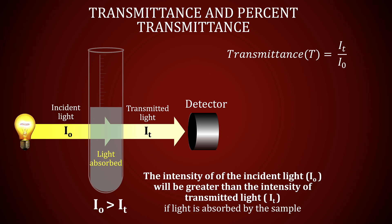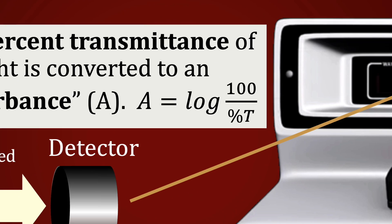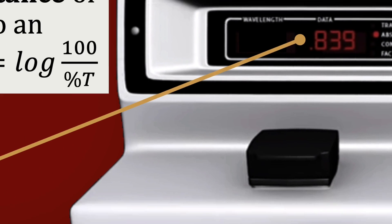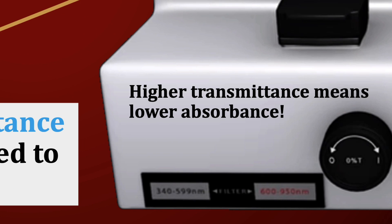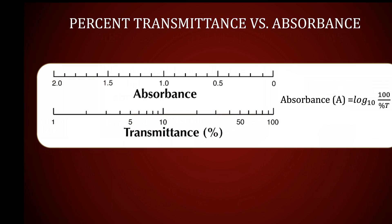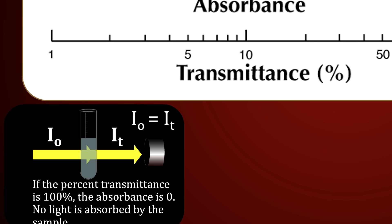The fraction of the light reaching the detector is called transmittance. The percent transmittance is the transmittance times 100. The percent transmittance is converted to an absorbance measured by the device. The percent transmittance is inversely proportional to the absorbance — in short, a higher transmittance means a lower absorbance. For example, if the percent transmittance is 100%, this means the light passed completely through the sample with no absorbance at all.